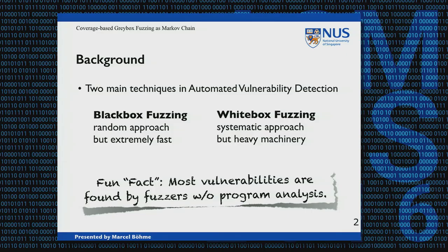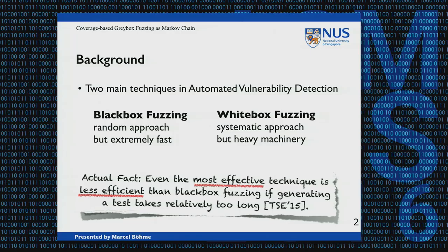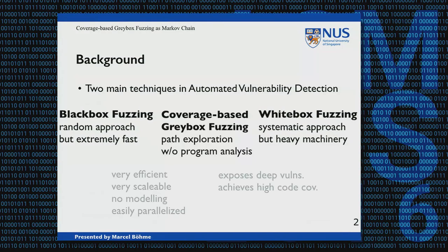Black box fuzzing is very efficient — you can have so many executions per second and it's scalable because there's no program analysis. You don't need to do any modeling, such as lifting the control-flow graph or modeling the memory or SMT theories, which are all needed in symbolic execution-based white box fuzzing, and you can easily parallelize it. Most vulnerabilities are found by fuzzers which do not use any program analysis — that's black box fuzzing. Even the most effective technique like symbolic execution-based white box fuzzing is less efficient than black box fuzzing if generating a test takes relatively too long.